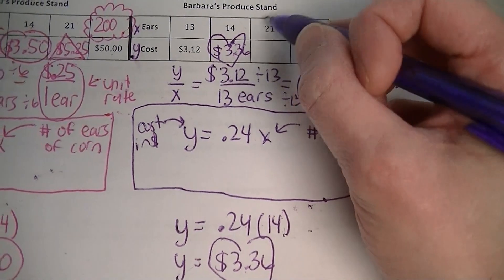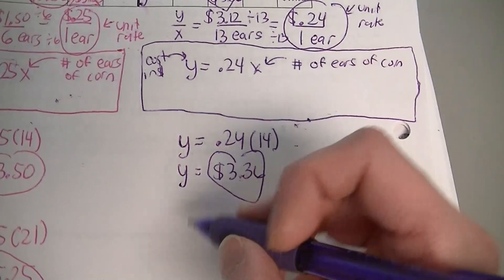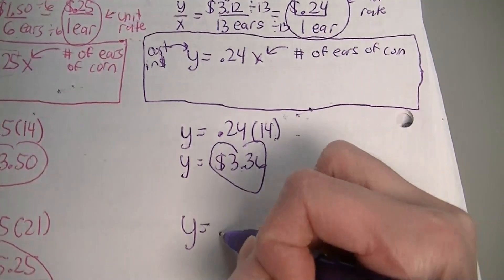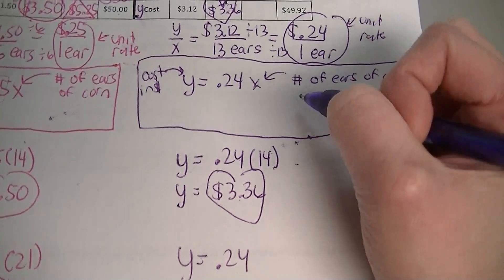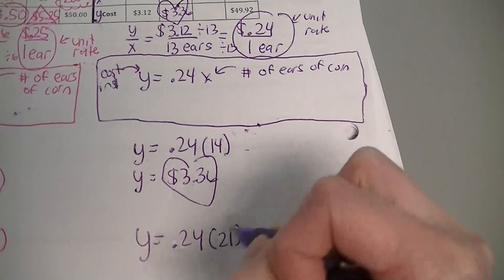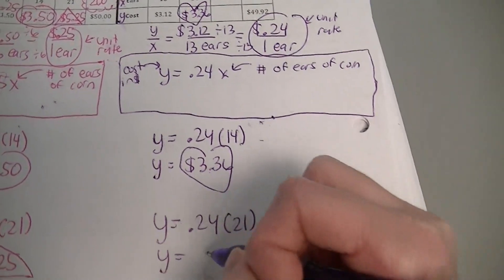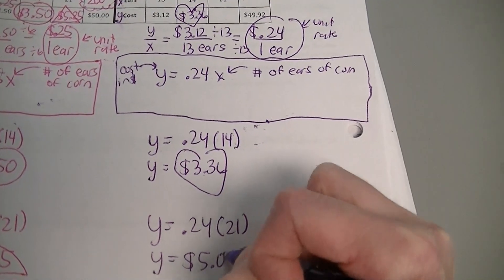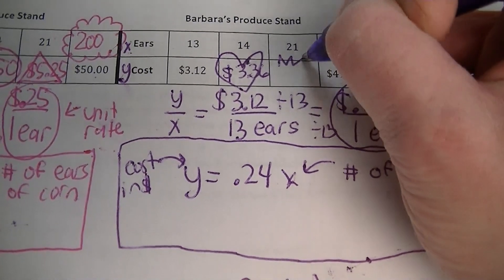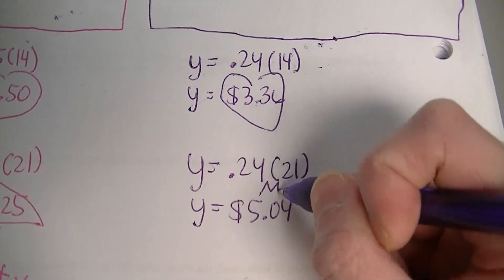The next one: they want to know how much 21 ears of corn would cost. Use that equation: y equals — keeping it a variable because we don't know the cost — 24 hundredths times 21 ears of corn. So 24 cents times 21 is $5.04. I'll draw a spiky cloud around that. So right there in the table we write $5.04.